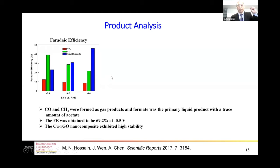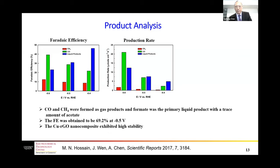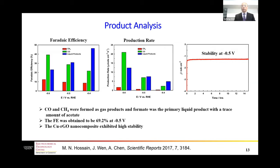When we look at the production rate, increasing the cathodic potential leads to an enhancement of the production rate. We also look at the stability of the nanocomposites — we tested the electrodes for about 15 hours and found that the material is very stable during our test.